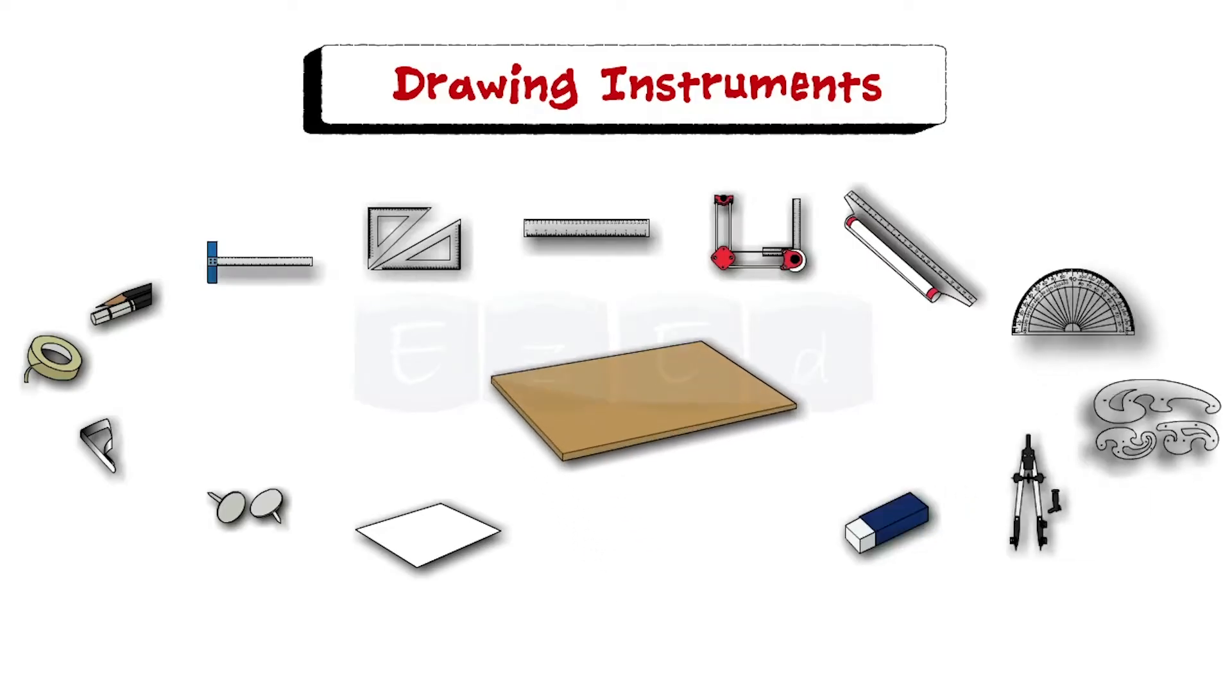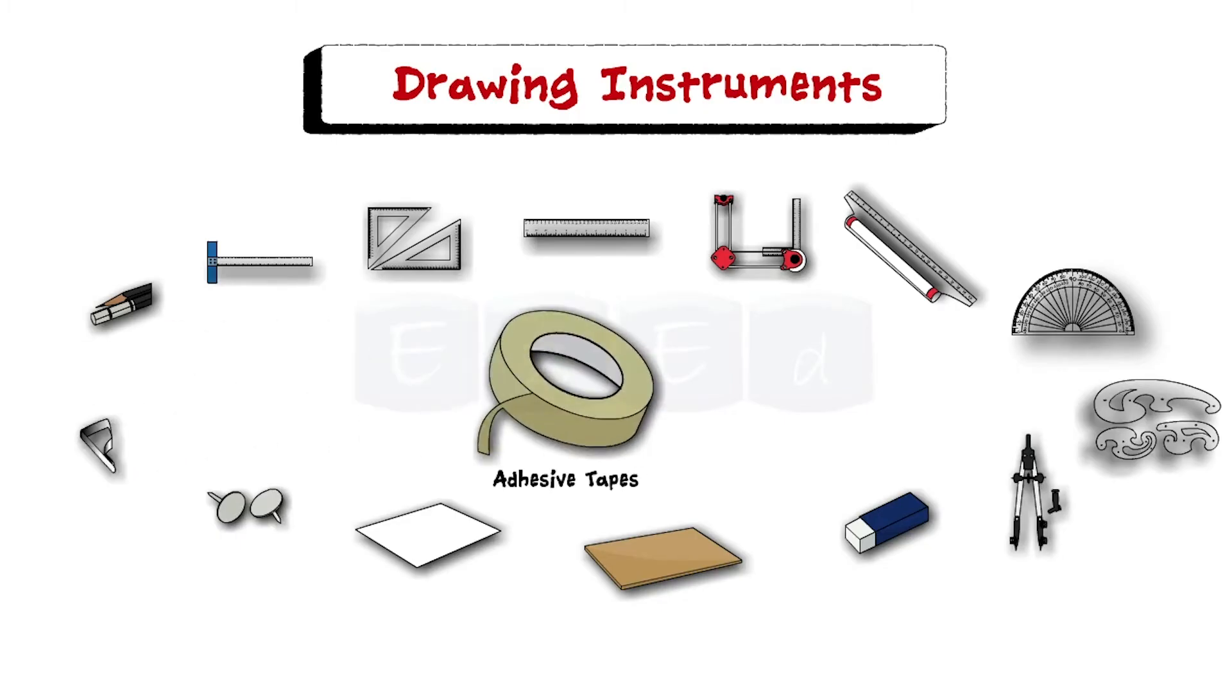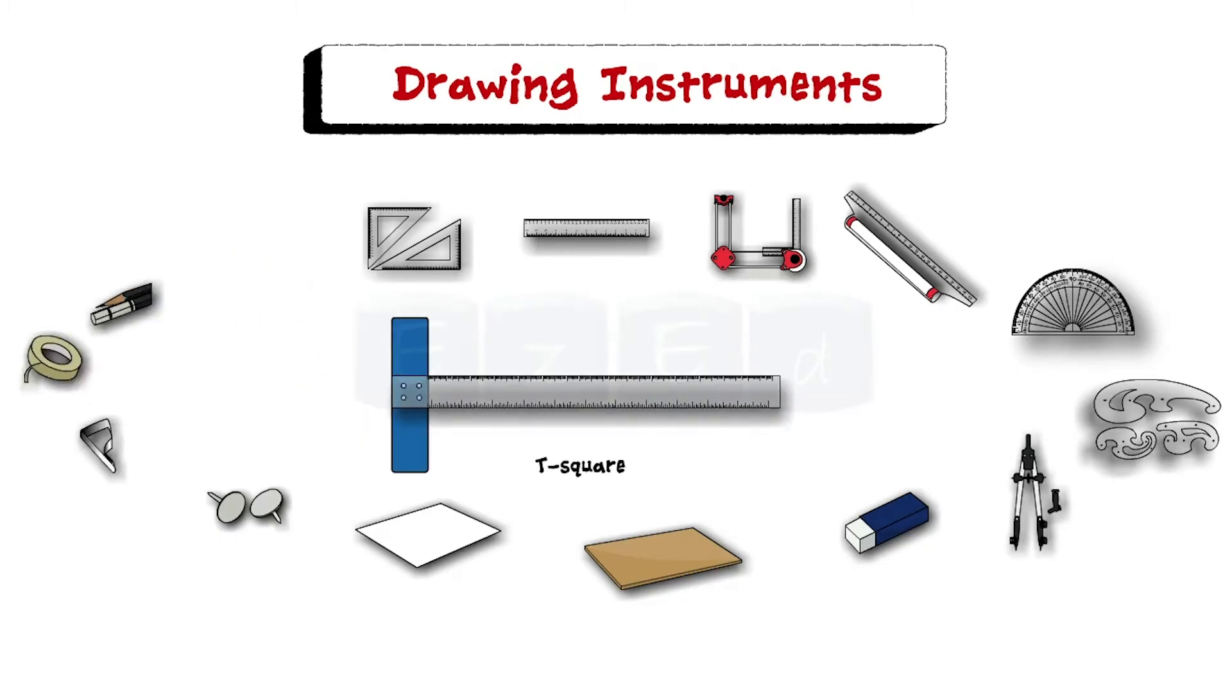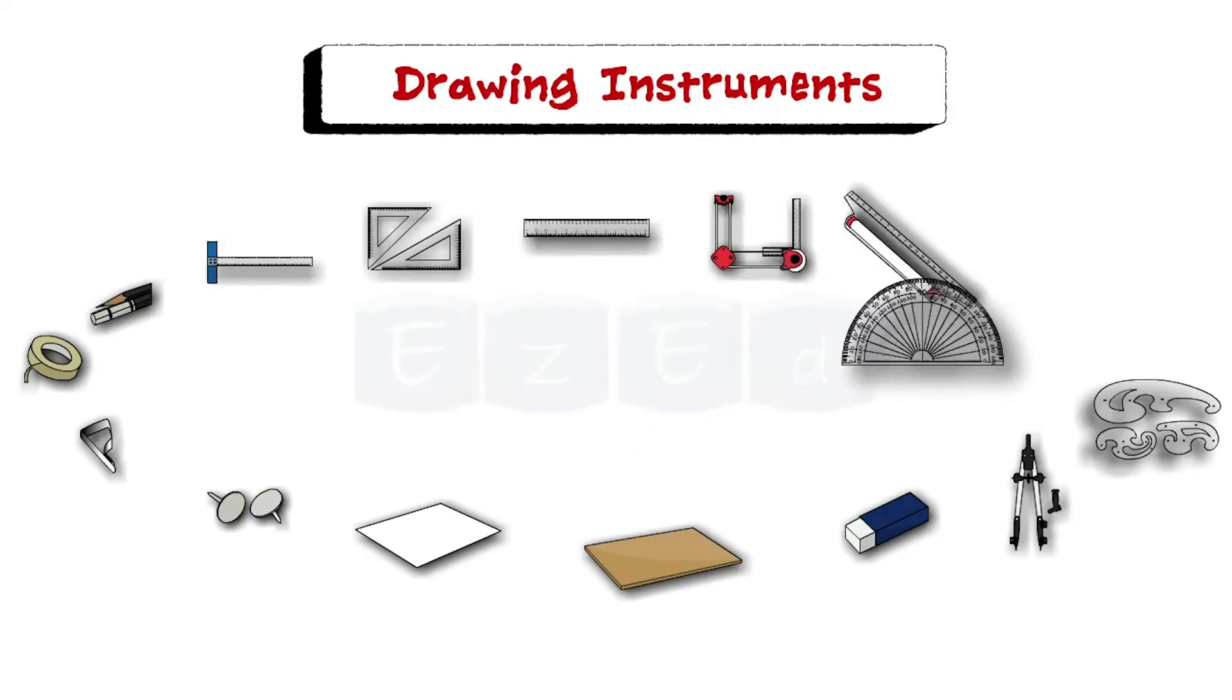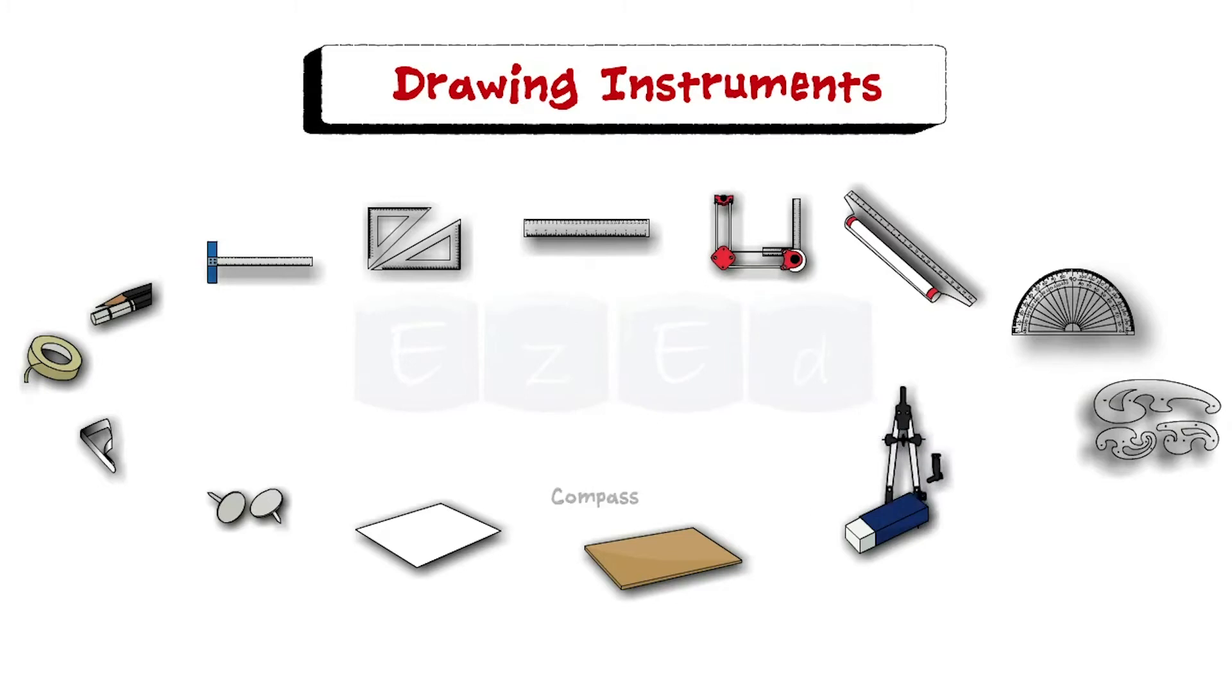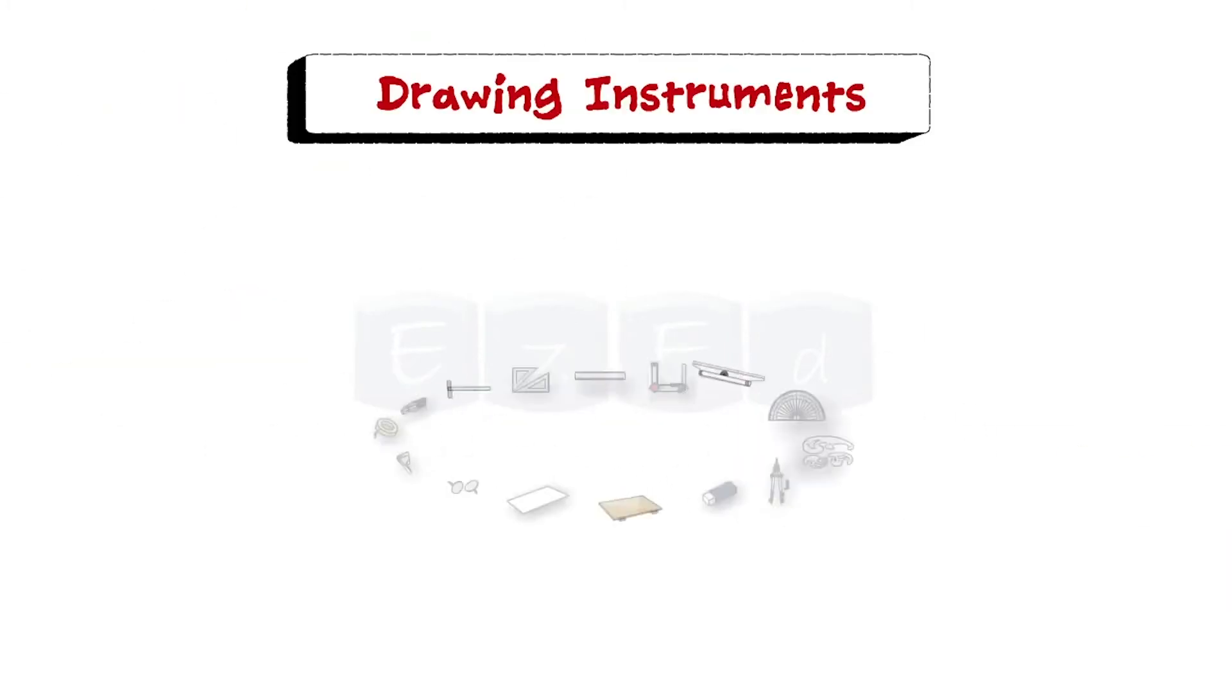In this we have a drawing board, drawing paper, pins, clips or adhesive tapes, pencils, t-square, set-square, scale, drafter, roller scale, protractor, french curves, compass and eraser. Now let us describe each and every instrument.